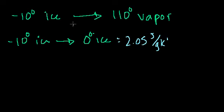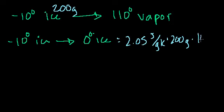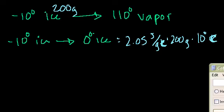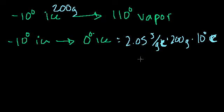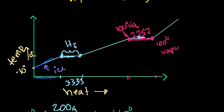Let's say we're dealing with 200 grams. So the heat for this step is 2.05 joules per gram Celsius times 200 grams times 10 degrees Celsius. Calculating: 2.05 × 200 × 10 = 4,100 joules. So going from minus 10-degree ice to 0-degree ice for 200 grams requires 4,100 joules — that's this first sloped segment on the diagram.